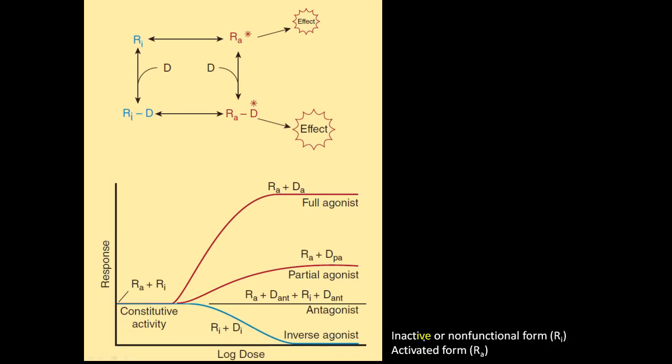So first of all, the Ri is an inactive or non-functional form of a receptor, and the Ra is the activated form of the receptor. So right here, we have a receptor that's inactive. So if we add a drug to the inactive receptor, it might not produce a response. And then the drug can also be switched over to a receptor that's active, and then that can lead to an effect. And then we can also have a drug that is on an active receptor that also leads to an effect. So here we have, this is constitutive activity.